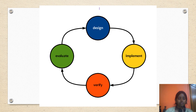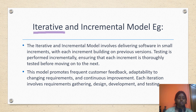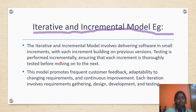This iterative and incremental process continues until the product is satisfactory to the customers. Some examples: the iterative and incremental model involves delivering software in small increments, with each increment building on the previous version. Testing is performed incrementally, ensuring each increment is thoroughly tested before moving on to the next. This model promotes frequent customer feedback, adaptability to changing requirements and continuous improvement. Each iteration involves requirement gathering, design, development and testing.